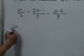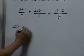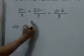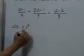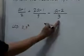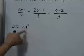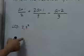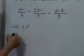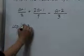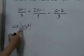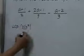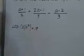For 2, we have 2. For 9, we have 3 squared. For 3, we already have that in 3 squared, and therefore the least common denominator is the product of 2 and 3 squared, or 18.